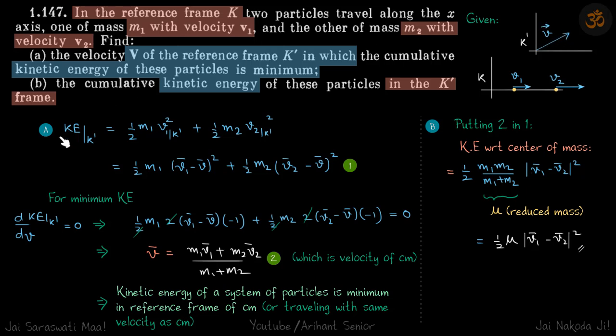Kinetic energy of the system with respect to K' is half m1 times velocity of particle 1 with respect to K' squared plus half m2 times velocity of particle 2 with respect to K' squared. This we can write as v1 minus v K', so v1 is simply v1 and velocity of K' is v. Similarly, v2 K' will be v2 minus v.